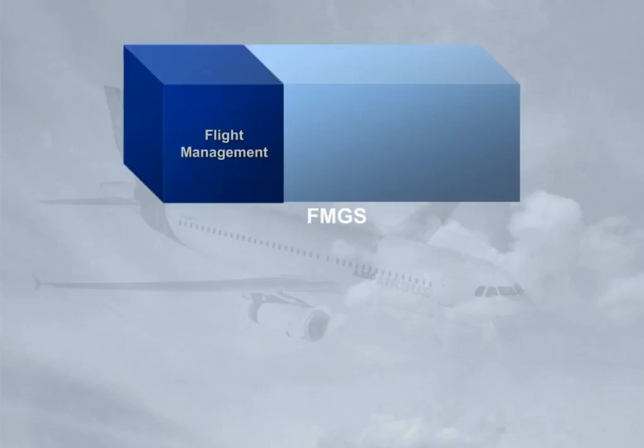The FMGS is divided into three main parts: Flight Management, Flight Guidance, and Flight Augmentation.